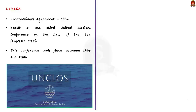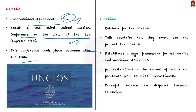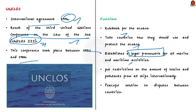UNCLOS is an international agreement that came into force in 1994. This convention is a result of the third United Nations Conference on the Law of the Seas, which took place between 1973 and 1982. UNCLOS replaced the four treaties of the 1958 Convention on the High Seas. UNCLOS is like a rule book for the ocean — it tells countries how they should use and protect the oceans. It covers everything related to the sea, from fishing and shipping to exploring resources under the seabed. Basically, it establishes a legal framework for all marine and maritime activities.